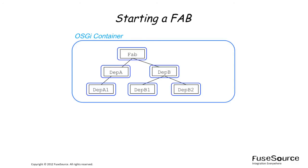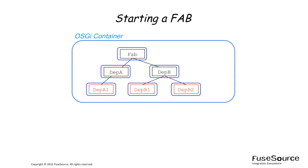To start a FAB, use the FAB start console command. When you invoke FAB start on a FAB bundle, you don't just start the FAB bundle itself, but all of its transitive dependencies as well — starting with the leaves of the dependency tree and working back to the FAB itself.